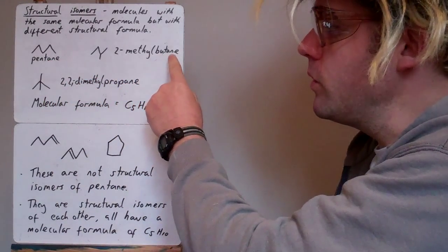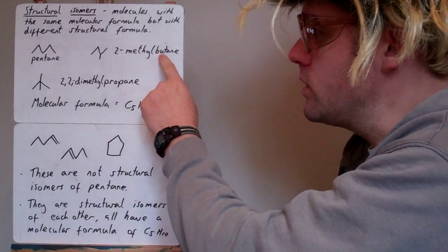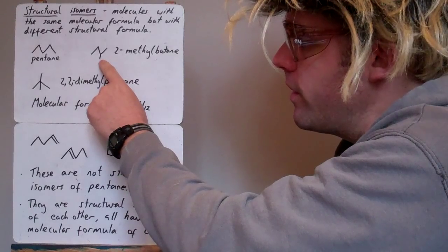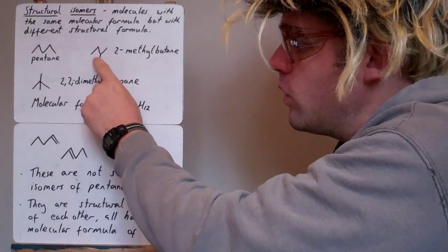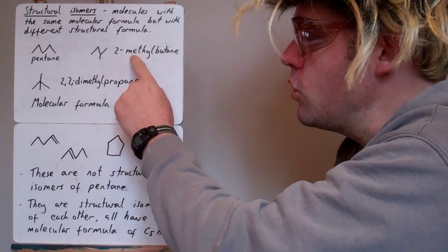This one's 2-methylbutane. We've got 1, 2, 3, 4 carbons, so that's the butane part. Methyl, because we've got one branch coming off here on the second carbon, so it's 2-methyl. We don't call it the third carbon because we count from the side that gives the lower number. So it's 2-methylbutane.